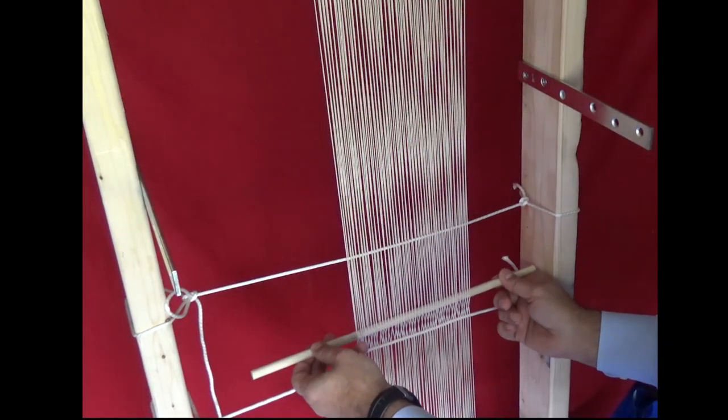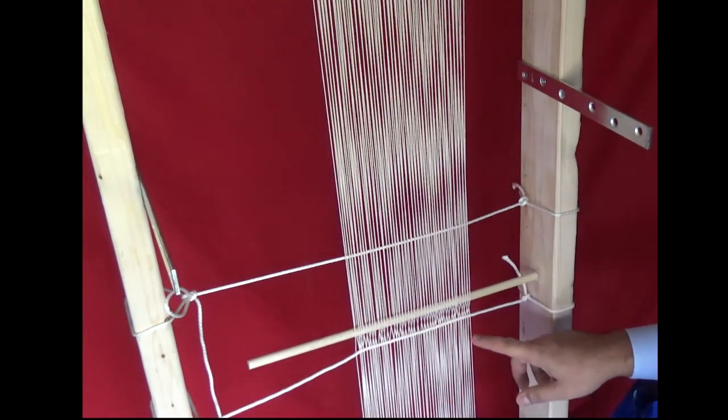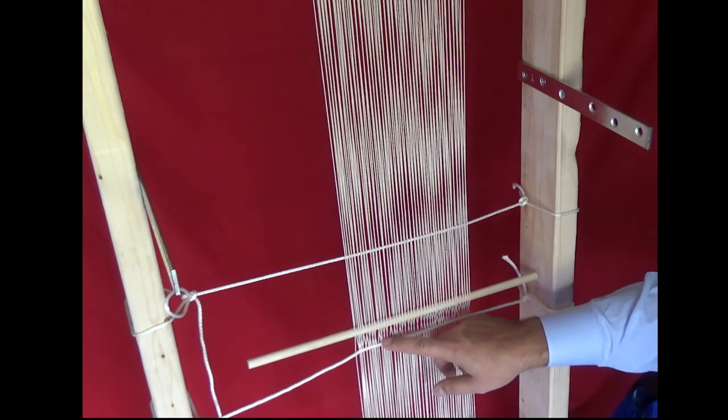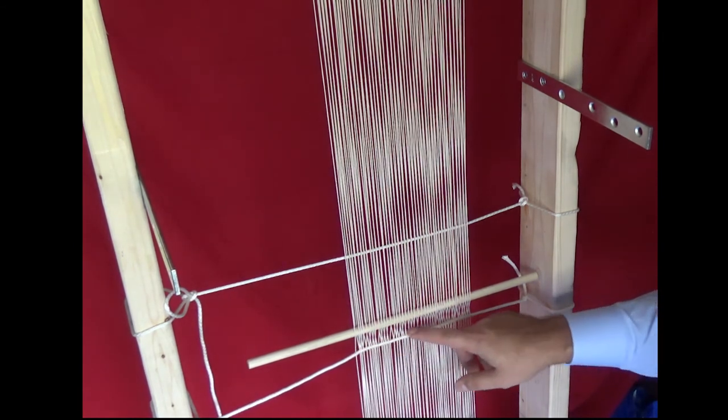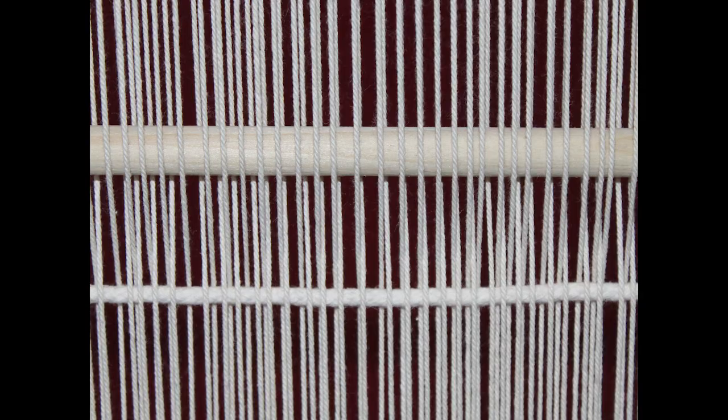One last inspection by pulling down the shed stick until it reaches the crossing point. Look closely. Each successive string should be over and under all the way across.